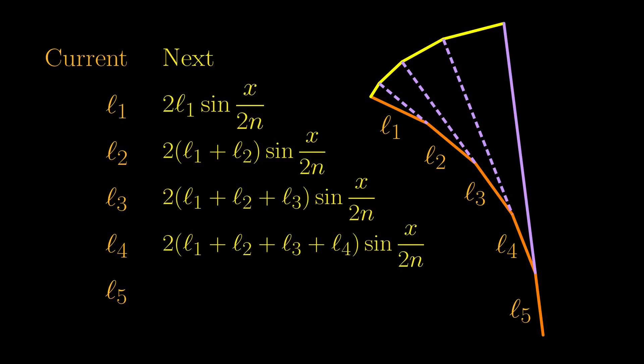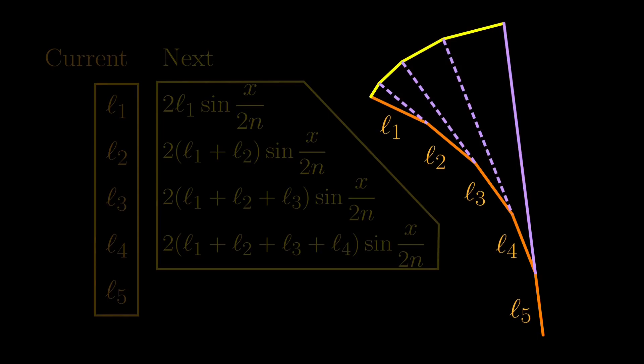l1, l2, and so on are the lengths of the current parts of the involute. And for the next involute, we get these sin x over 2n stuff as seen before. But you might notice a bit of quirk here. While we have 5 segments at the start, the next involute is going to only have 4 segments. This comes down to how we did the unwrapping procedure. We have already stopped when the string formed a line with l5. But in any case, this tells us how to go from one involute to the next.